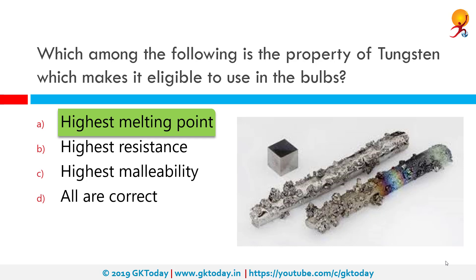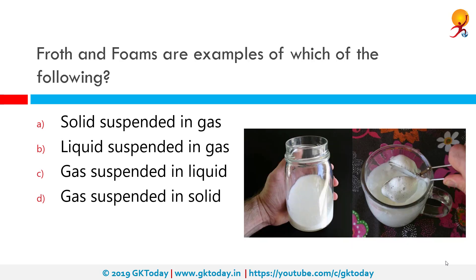The filament should be thermally isolated as much as possible using insulating support. The bulbs are usually filled with chemically inactive nitrogen and argon gases to prolong the life of the filament. Most of the power consumed by the filament appears as heat, but a small part of it is in the form of light.